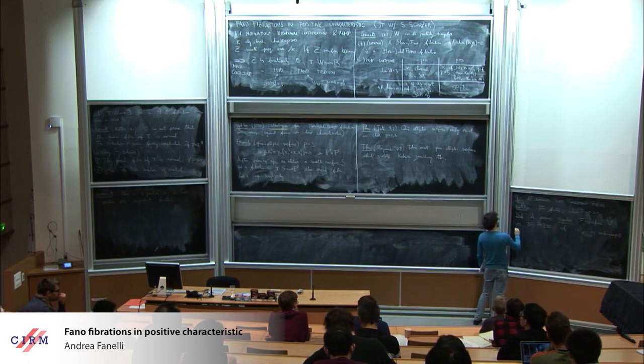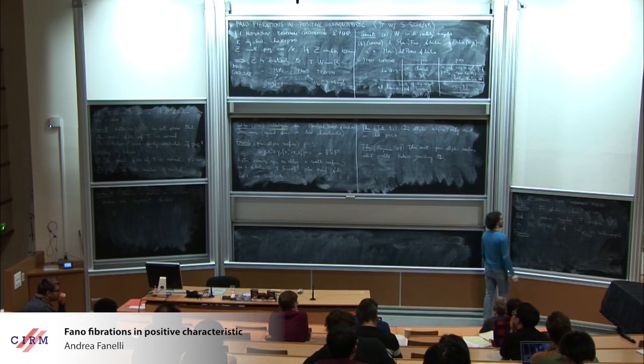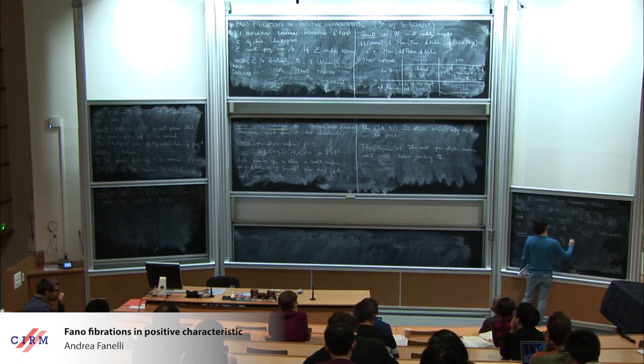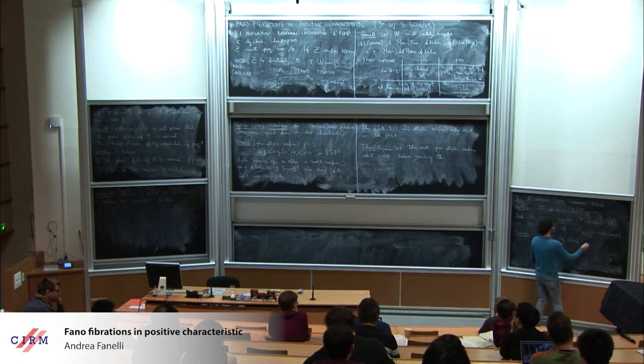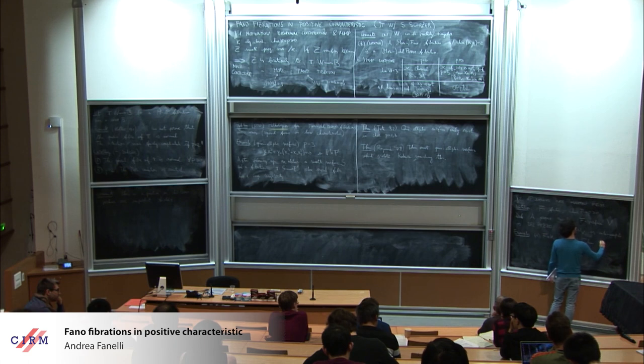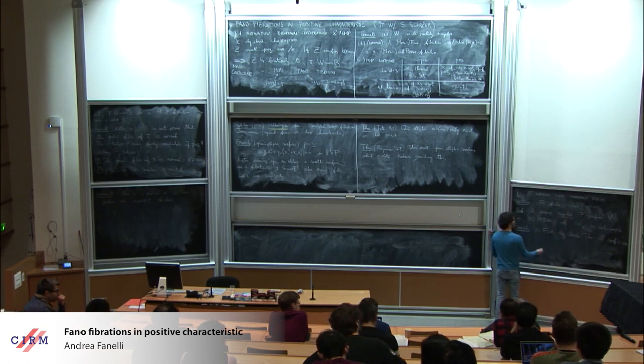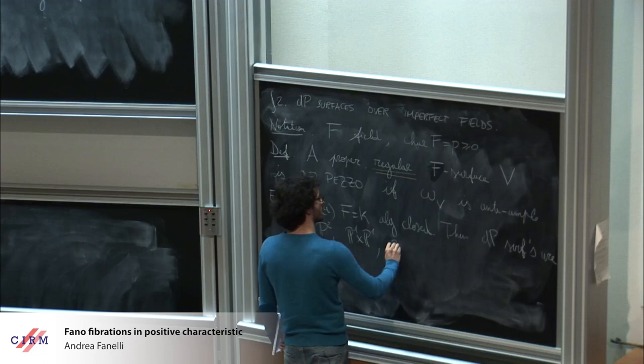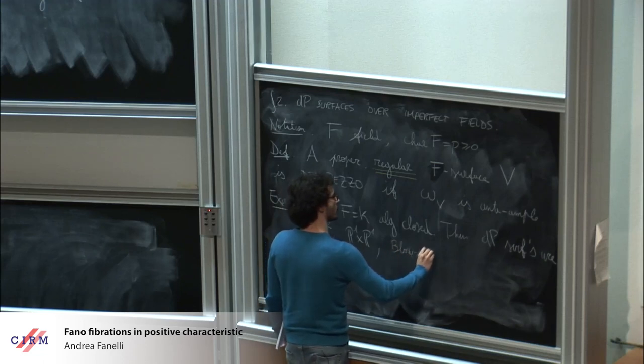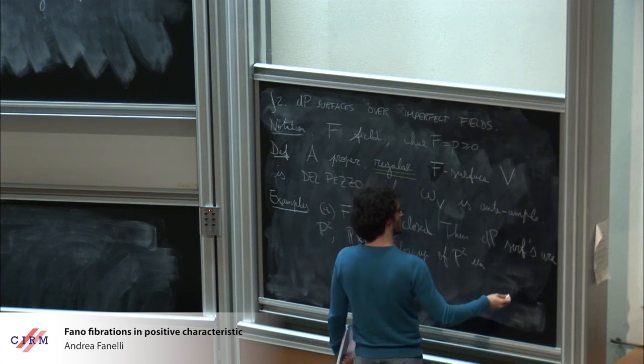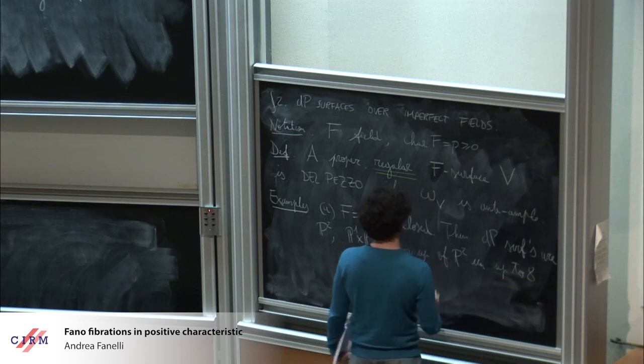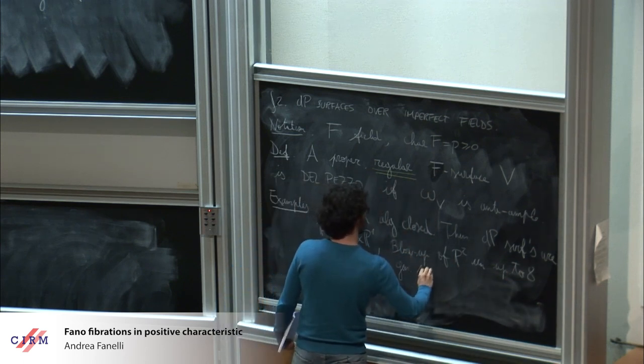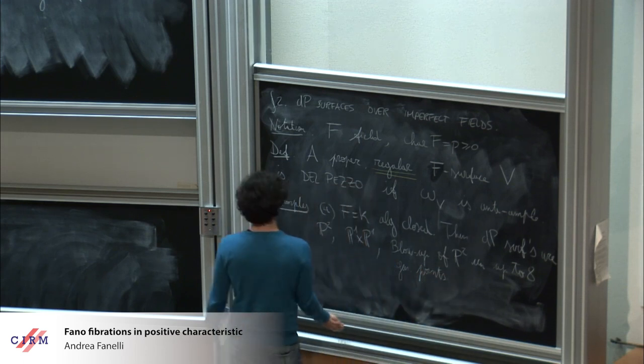Let me give some examples. A. Assume that F is K algebraically closed. Then, del Pezzo surfaces are P2, P1 cross P1, and the blow up of P2 in up to eight points in general position.